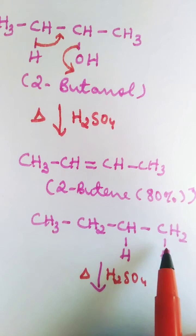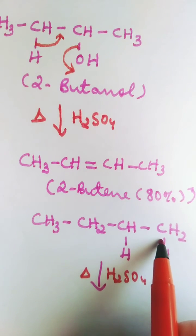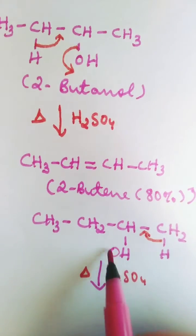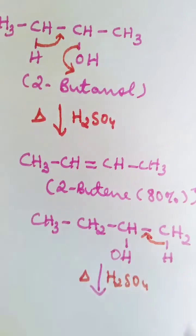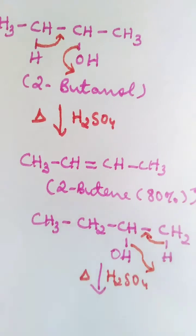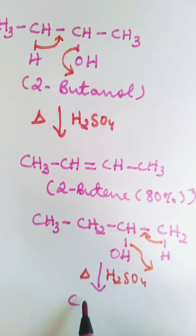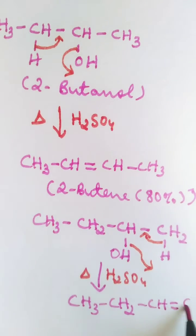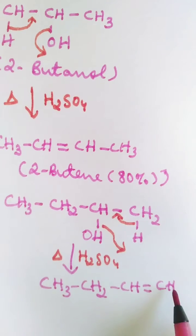Now, these electrons can form a bond here. Sorry, this one is OH, and this one goes out as OH-. So we have CH3-CH2-CH double bond CH2.